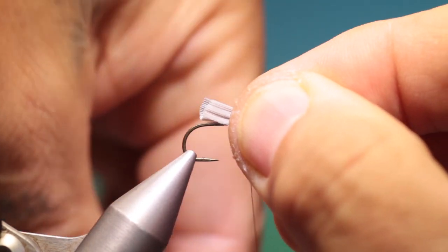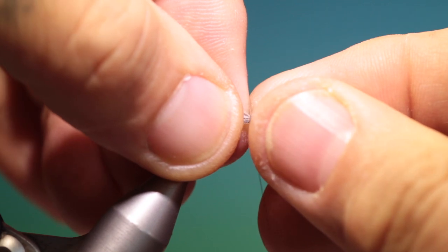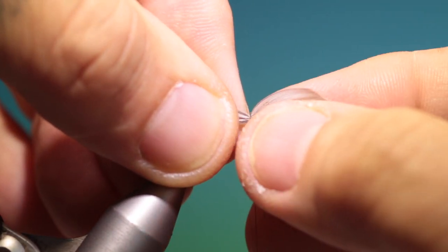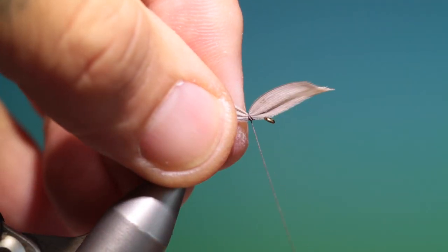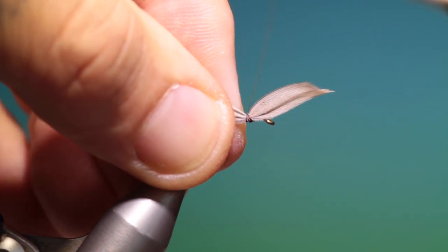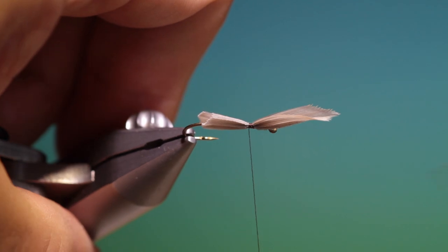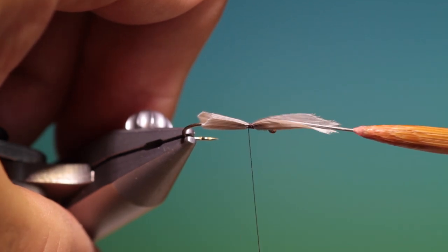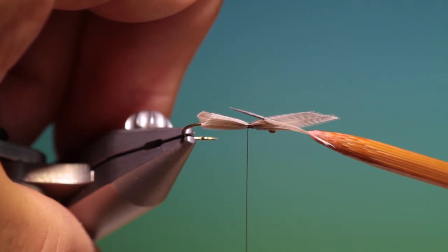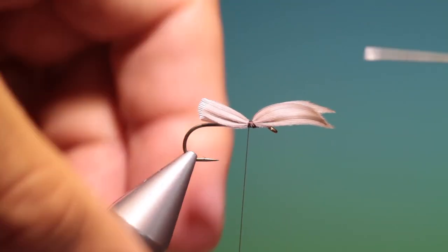Go back down at the back. And we'll check the wings out. I'll just secure them. Those are looking good. Split them with my dubbing needle. Those are looking good.